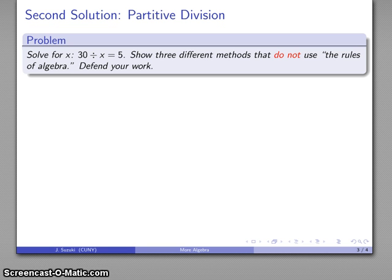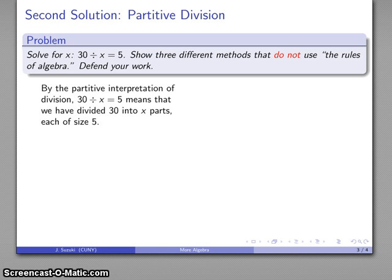Much more effectively, we might use the notion of partitive division. Let's take a look at what this equation means: 30 divided by x equals 5. If I view this as a partitive division, I'm taking 30, dividing it into a number of pieces.